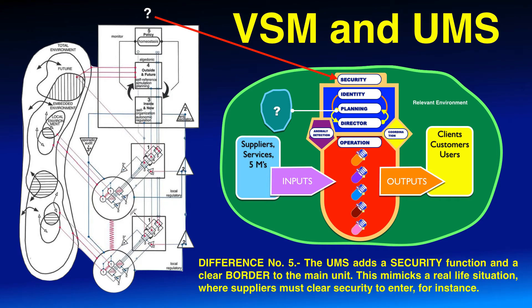Difference number five: the UMS adds a security function and a clear border to the main unit. This mimics a real-life situation where, for instance, suppliers must clear security to enter.